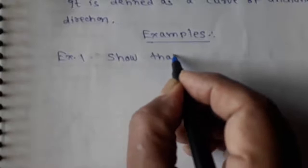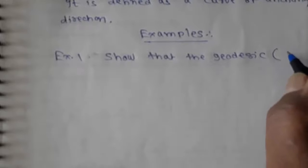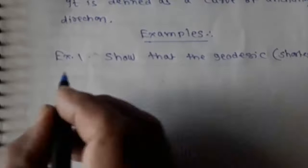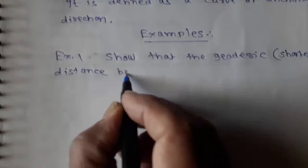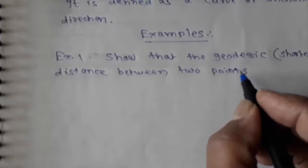Example 1: Show that the geodesic, that is the shortest distance between two points, in Euclidean space is a straight line.